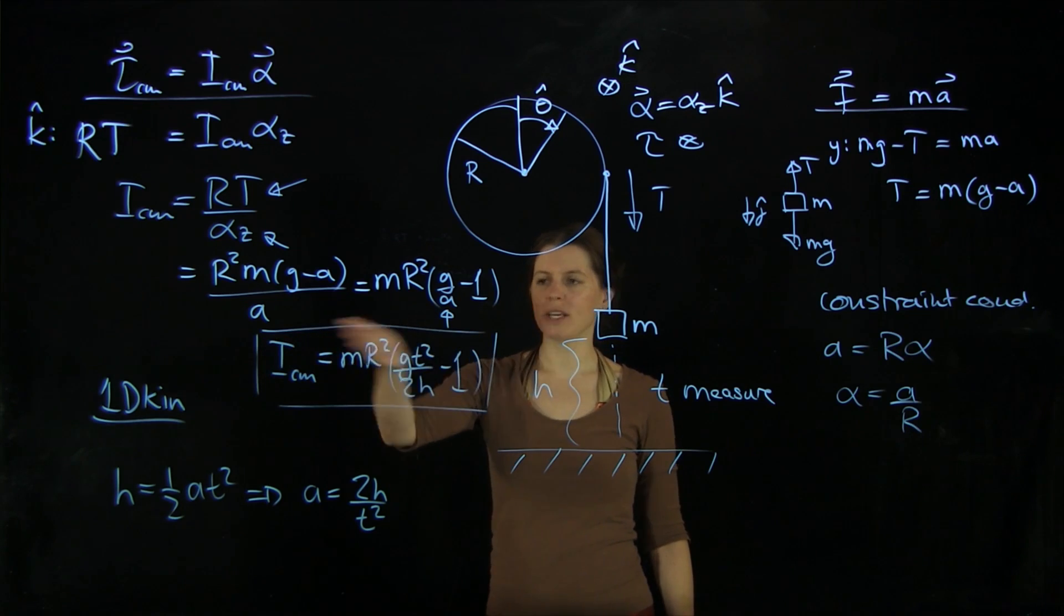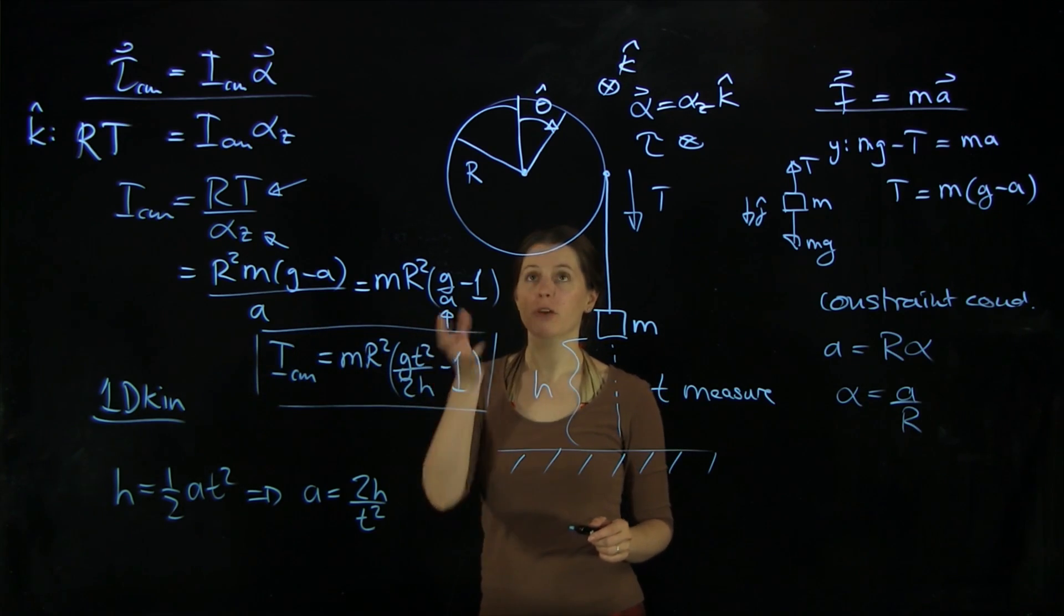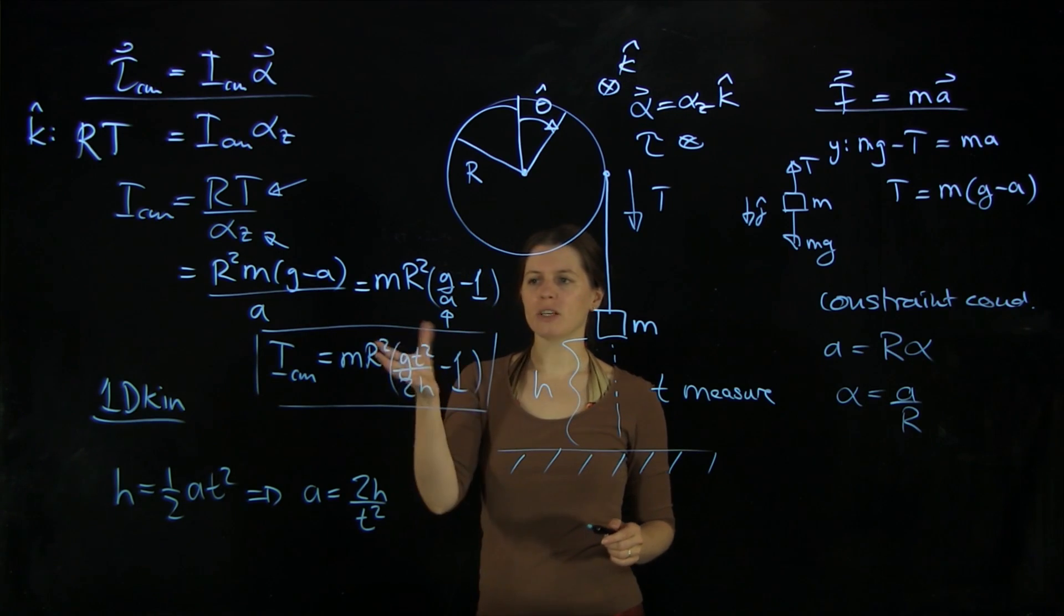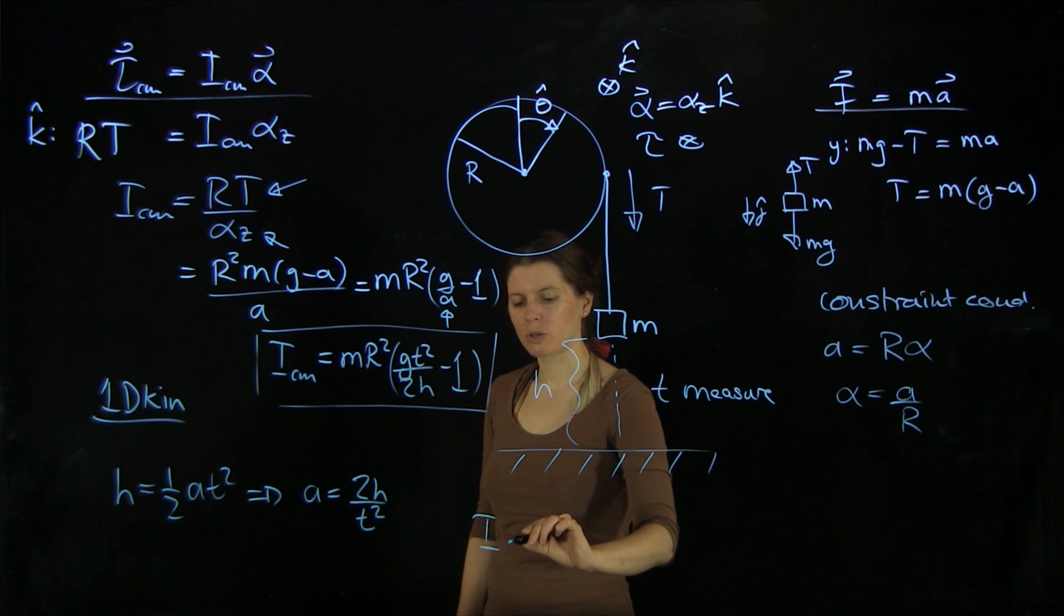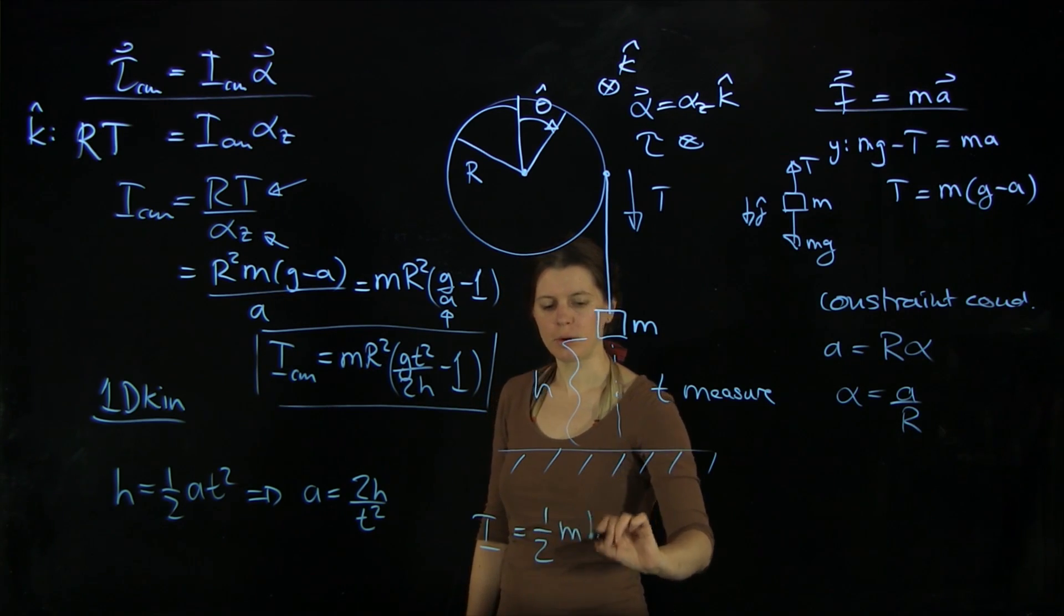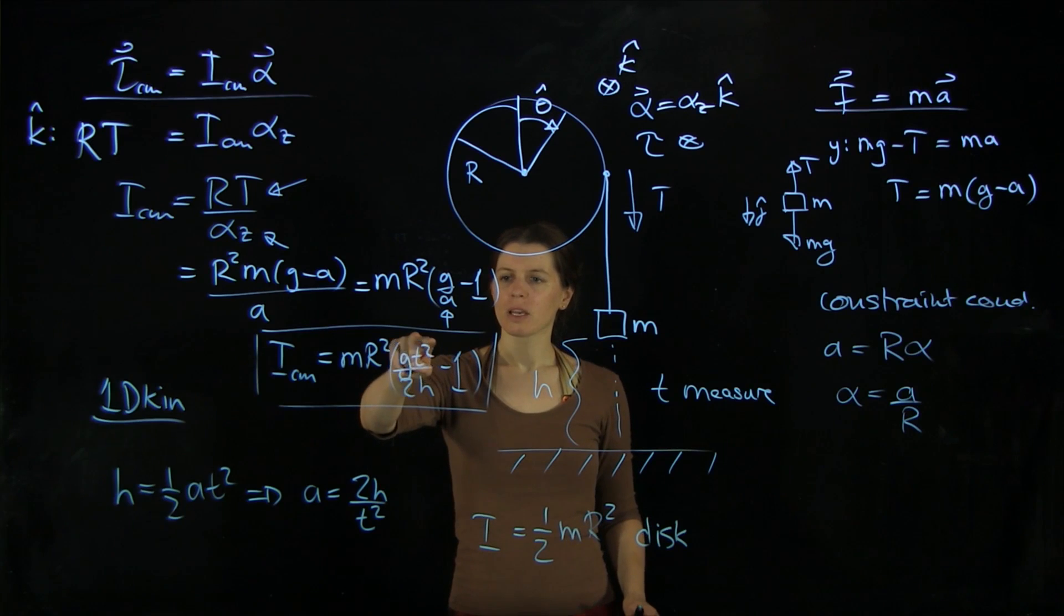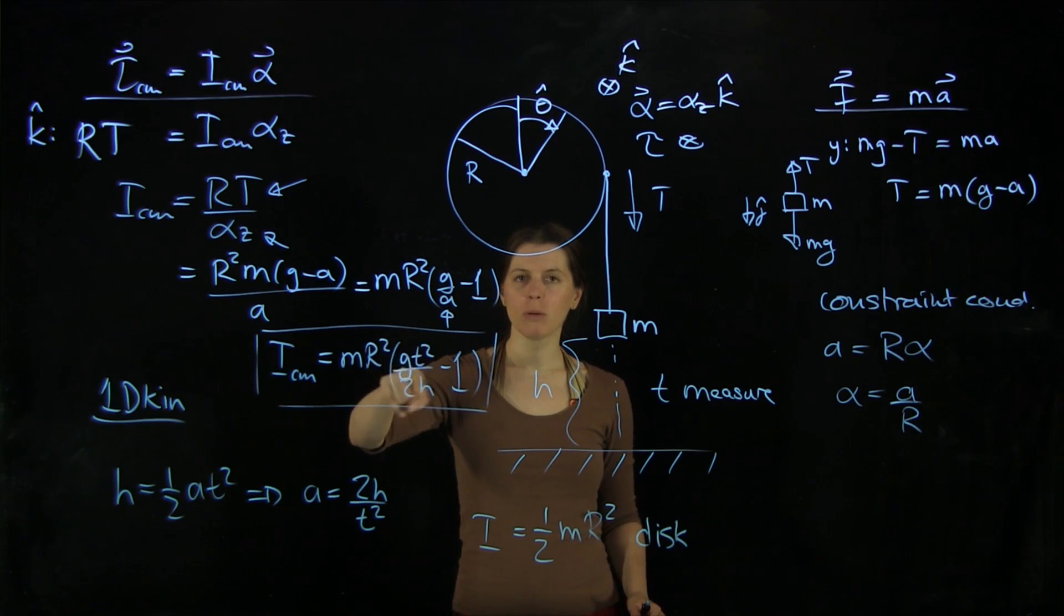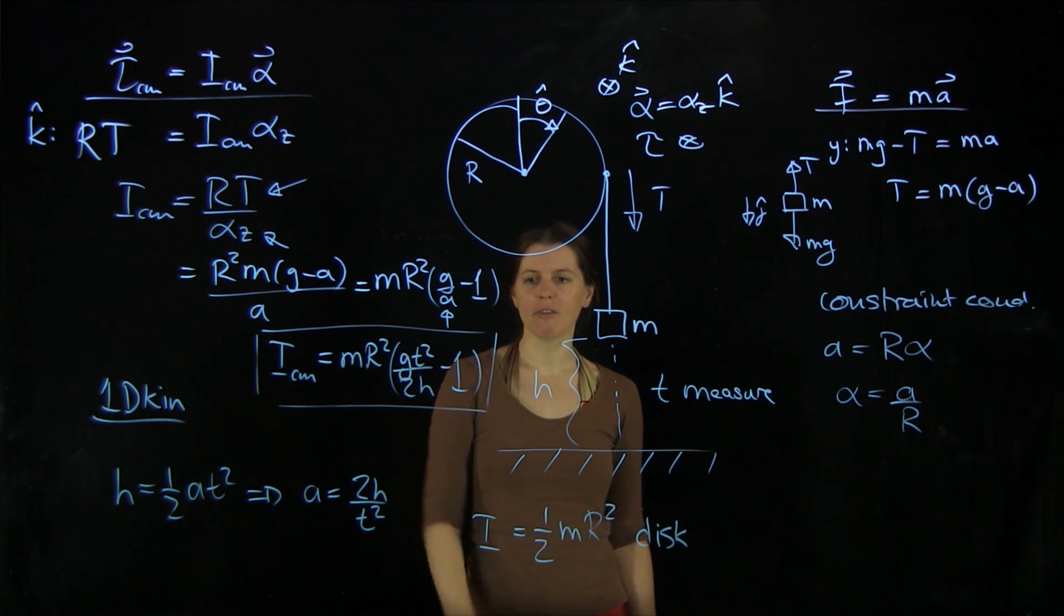And this actually already resembles, if you know the theoretical, this already resembles the theoretical solution, which of course is for a disk 1/2 m r squared. So that's what one expects for a disk. And you see that we are very close. So this term here is probably something like 1.5 or should better come out to be 1.5 because if we subtract 1, we get to that half here.